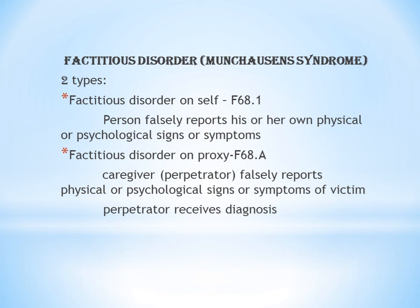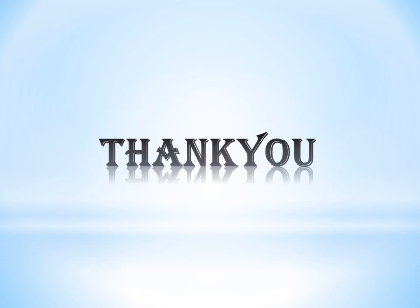So, factitious disorder is of two types: on self, where the person falsely reports their own physical or psychological symptoms (F68.1), and on proxy, where the person falsely reports about someone else (F68.8). That's all for this chapter — it is a very small chapter. If you have any doubts, you can ask in the comment section. Thank you.